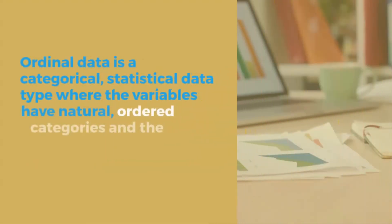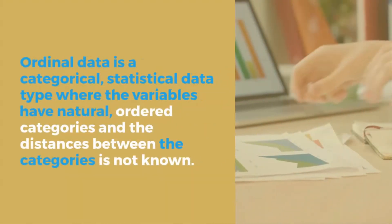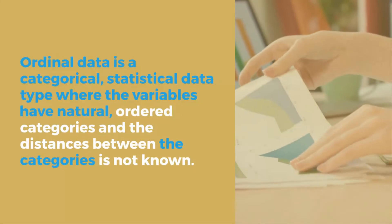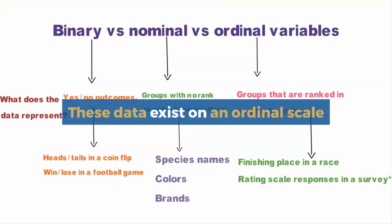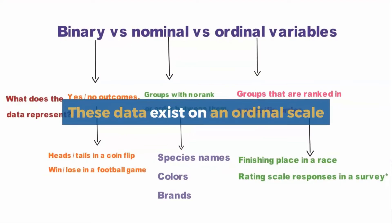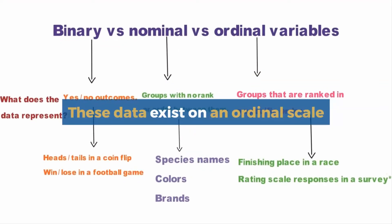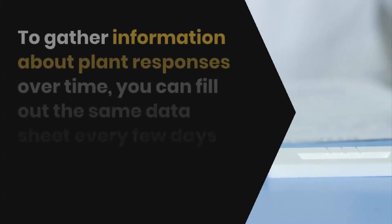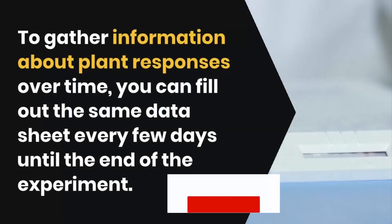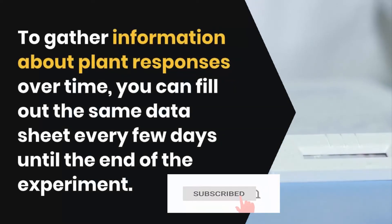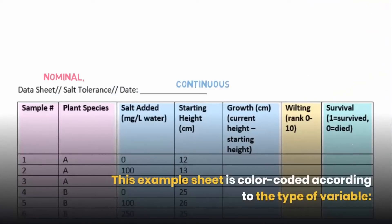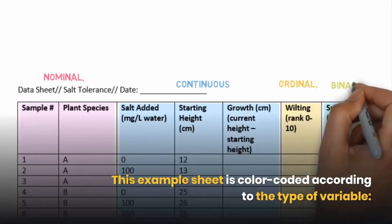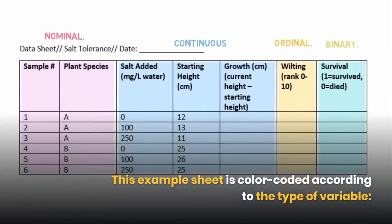What is an ordinal variable? Ordinal data is a categorical statistical data type where the variables have natural ordered categories and the distances between the categories is not known. These data exist on an ordinal scale. To gather information about plant responses over time, you can fill out the same data sheet every few days until the end of the experiment. This example sheet is color-coded according to the type of variable: nominal, continuous, ordinal, and binary.